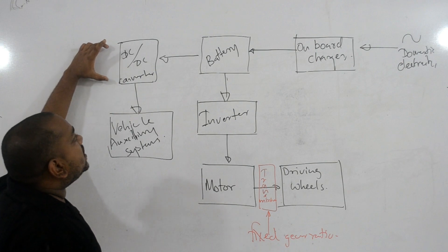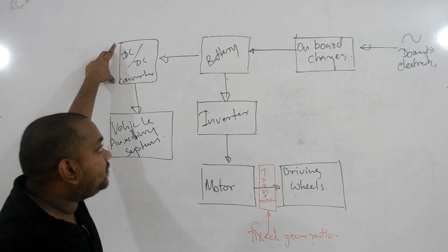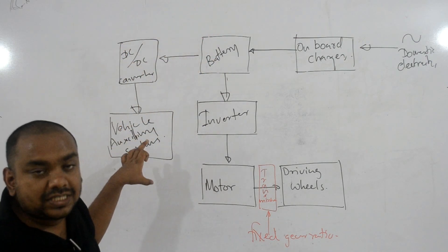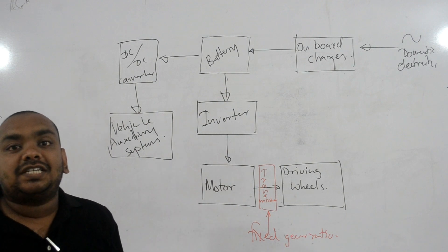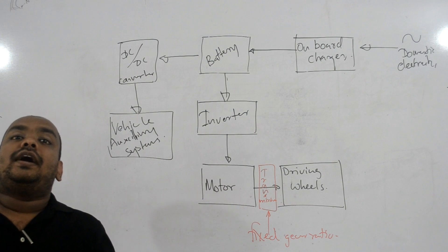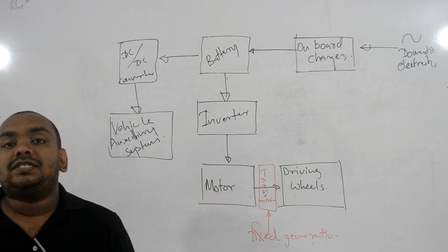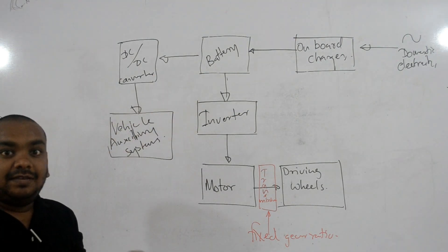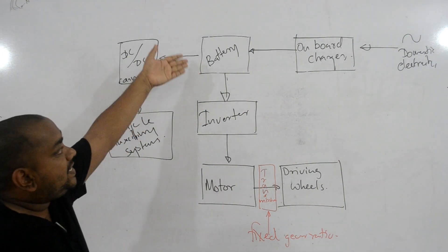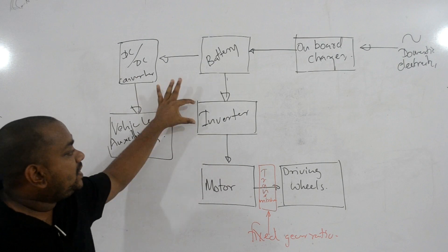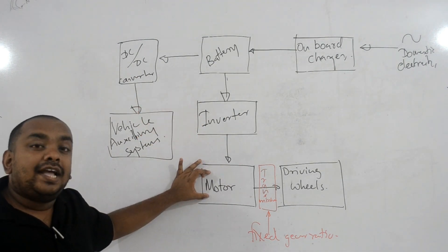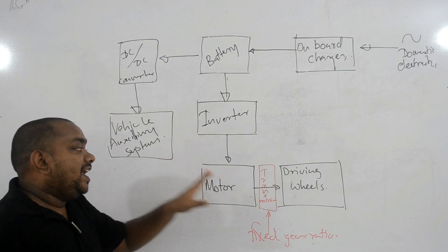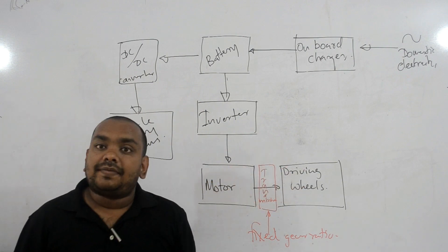We also have a DC-DC converter, which converts the high-voltage battery electricity down to 12V to 14V to energize the vehicle's auxiliary systems — such as lighting, control systems, stereos, and infotainment systems. The inverter converts the battery's DC to three-phase AC, and that energy goes to the motor. The motor then converts electrical energy to kinetic energy, which drives the driving wheels through the fixed gear ratio transmission.